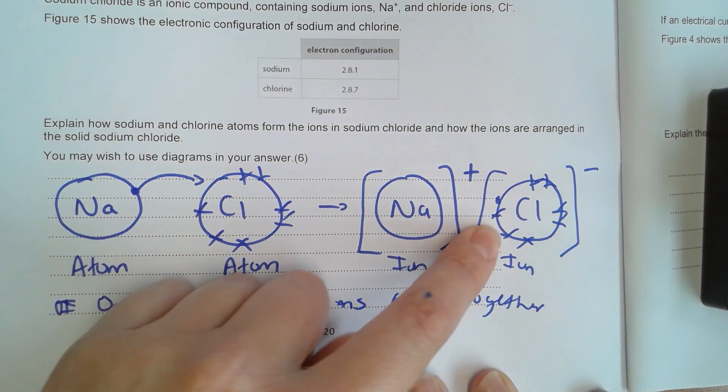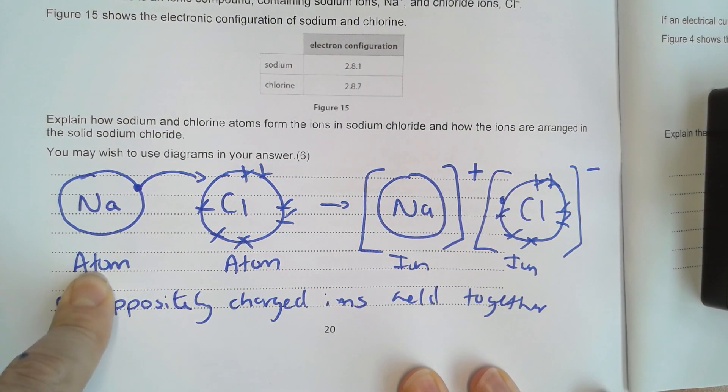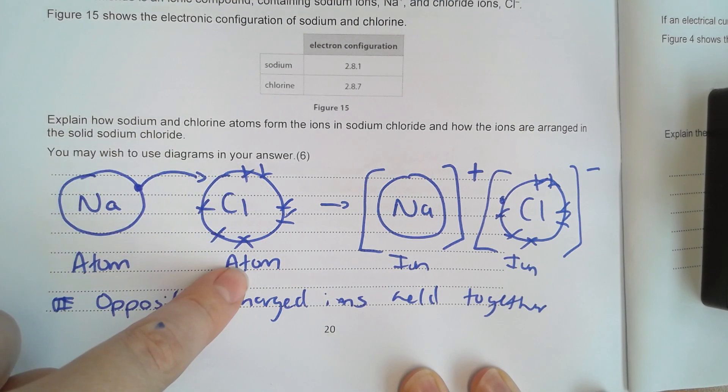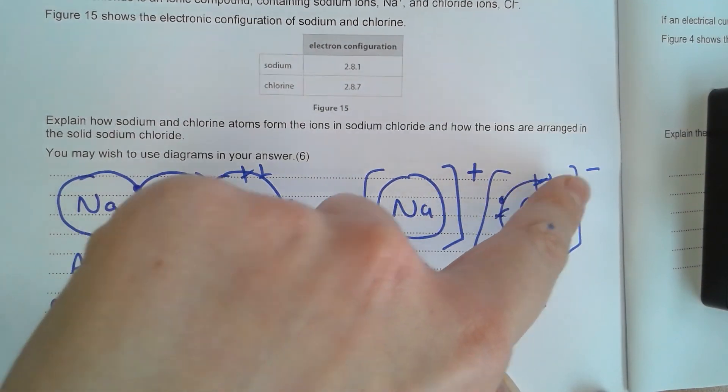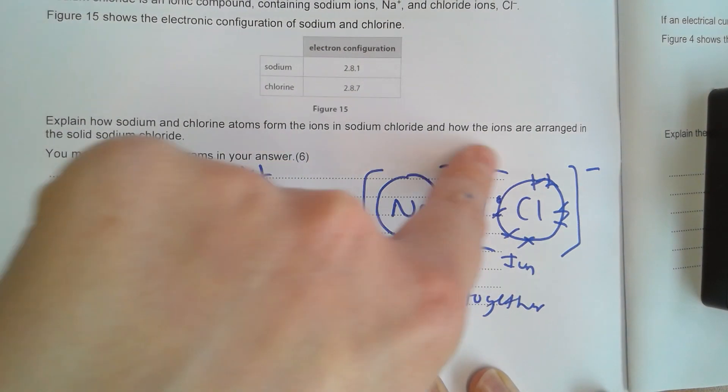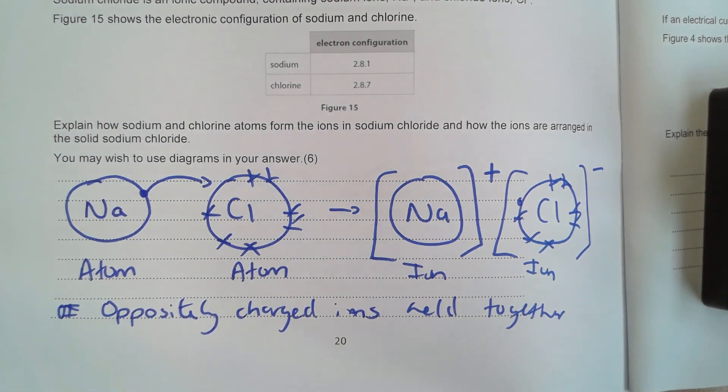If you wanted to write about this, you can do it in words. Just be careful that you're using the right phrases for atoms and ions. So it would be a sodium atom transfers one electron to a chlorine atom to form a positively charged sodium ion and a negatively charged chloride ion. You'd have to change the chlorine to chloride. So again, I do think it's easier to use a diagram. It's quicker and avoids you making any mistakes on terminology.